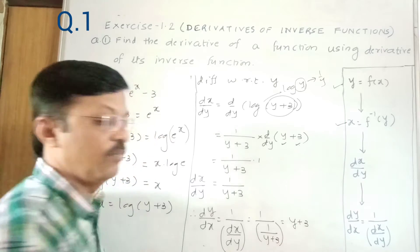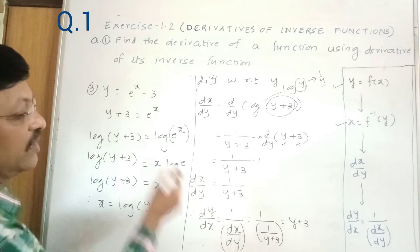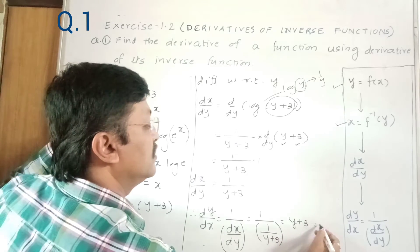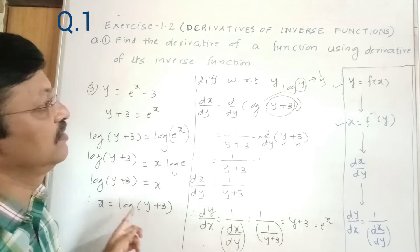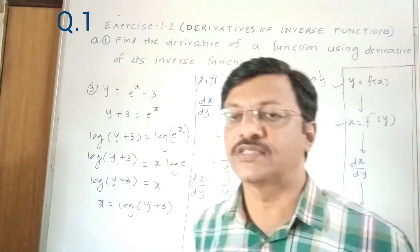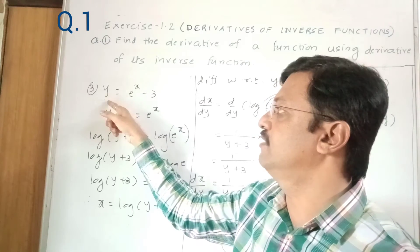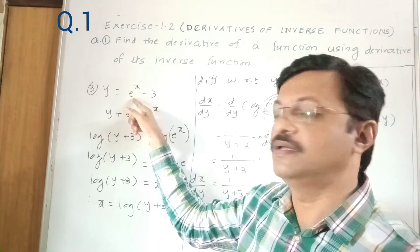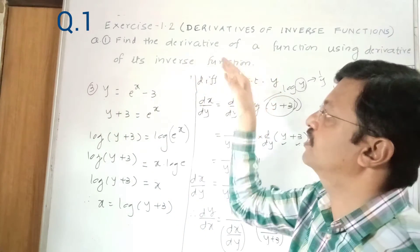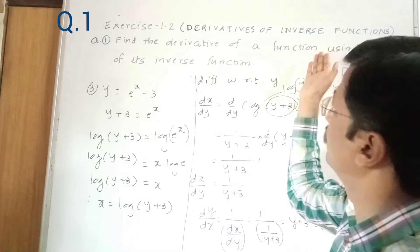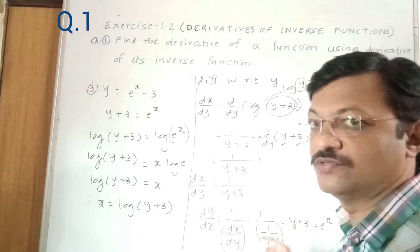Now y + 3 = e^x (from earlier), so dy/dx = e^x. That's how we found dy/dx in this example. These examples could have had their dy/dx found directly — for instance, derivative of e^x − 3 is simply e^x in one step. But as per the instruction we had to take the longer route using the inverse function method.